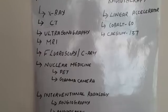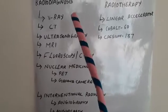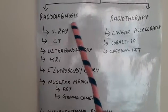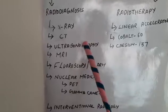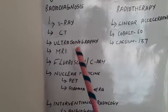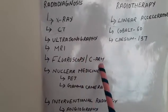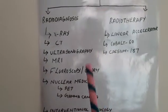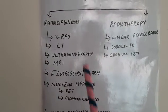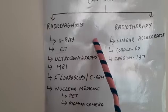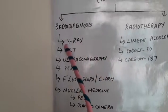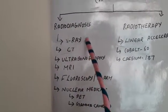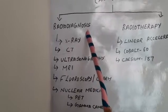In radio diagnosis we can find different modalities. These include X-ray, CT, ultrasonography, MRI, fluoroscopy, C-arm, nuclear medicine, and interventional radiology. These are all the different modalities in radio diagnosis.